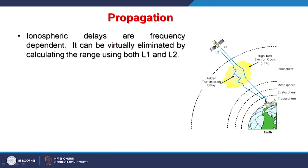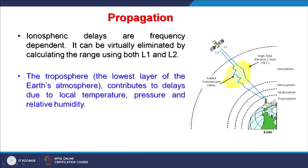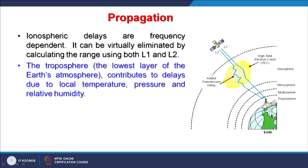Ionospheric delays are frequency dependent and can be virtually eliminated by calculating the range using both L1 and L2. With high total electron count (TEC) adding transmission delay on L2, by using these two frequencies together this delay factor can be virtually eliminated or minimized.